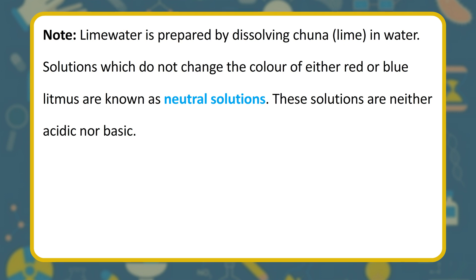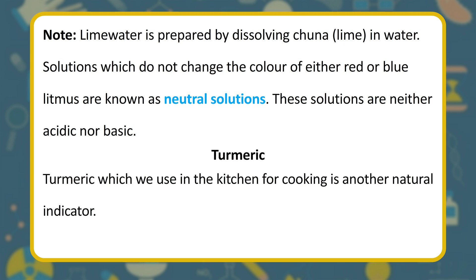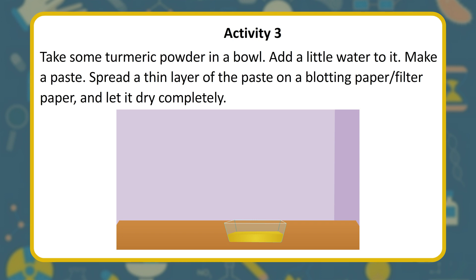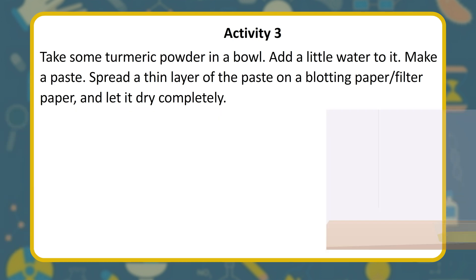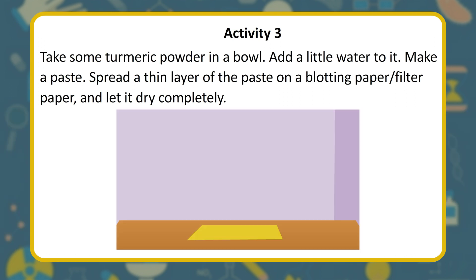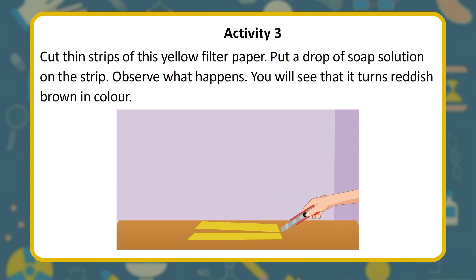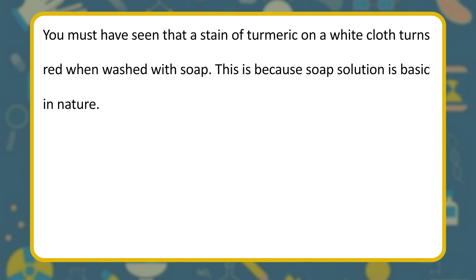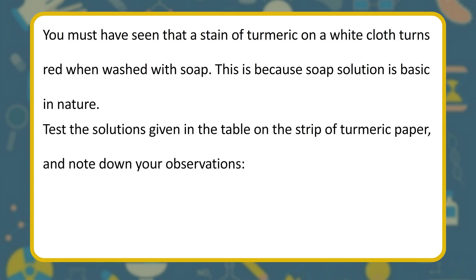Turmeric, which we use in the kitchen for cooking, is another natural indicator. Activity: take some turmeric powder, add a little water to make a paste, spread a thin layer on blotting/filter paper and let it dry, then cut thin strips. Put a drop of soap solution on the strip — it turns reddish brown in color. This is because soap solution is basic in nature. Turmeric is yellow in neutral and acidic solutions but turns red in basic solutions.